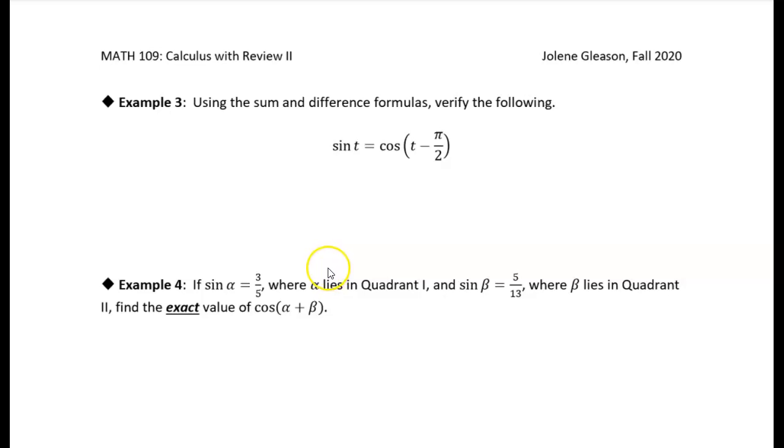All right, in this example, we're asked to use the sum and difference formulas to verify this identity. That's the sine of t is equal to the cosine of t minus pi over 2.